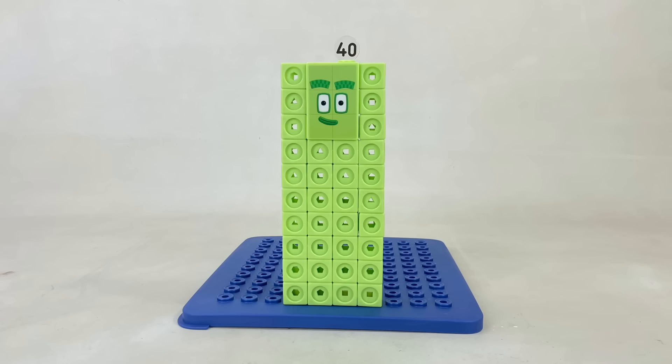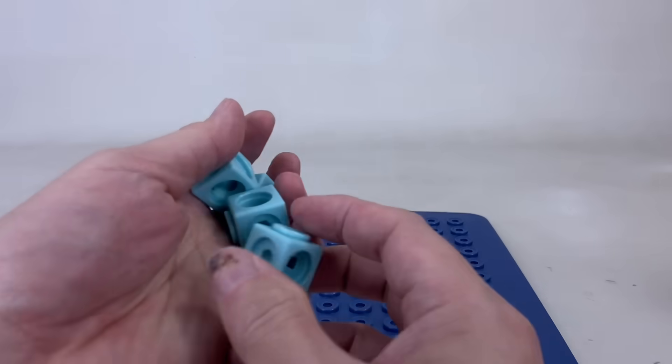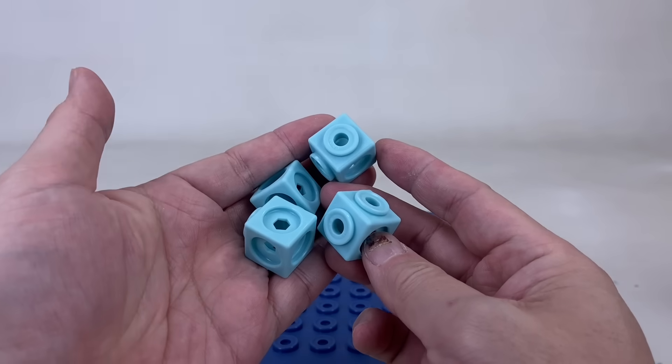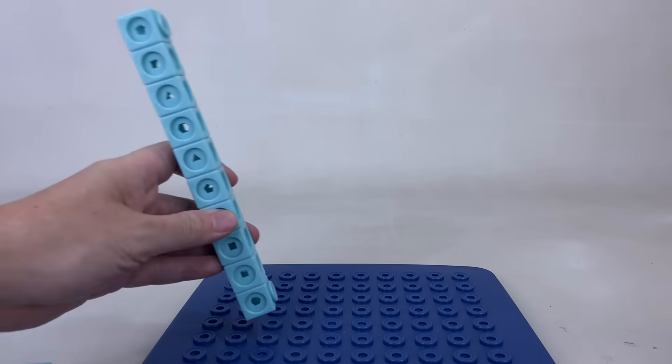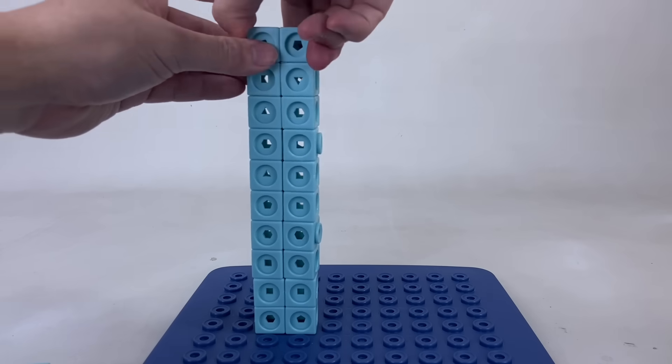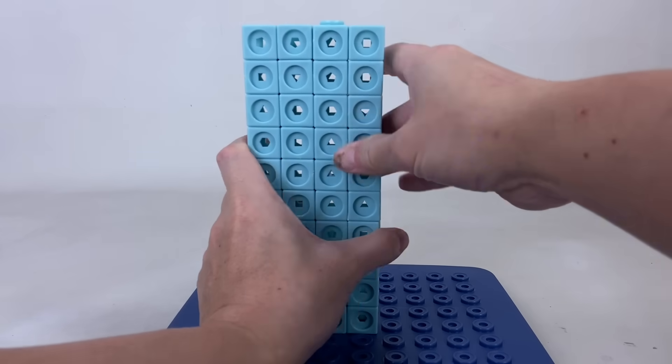40 is made up of four 10s or two 20s. The next star of the show is made up of light blue blocks including four special connectors. Let's count the blocks: 10, 20, 30, 40, 50.